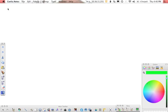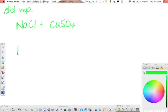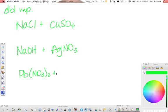So first off, we're going to start with some double replacements. We'll do NaCl plus CuSO4, and let's do NaOH plus AgNO3, and one more, how about lead nitrate plus potassium iodide?